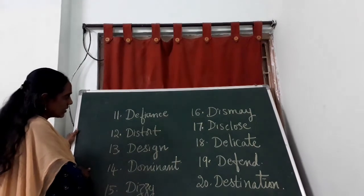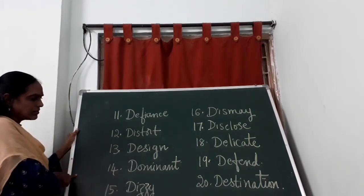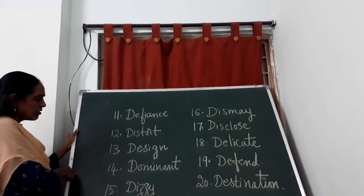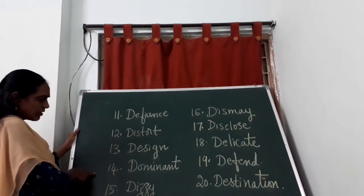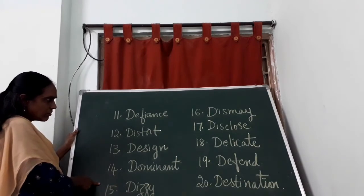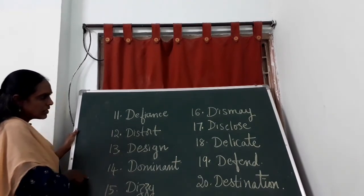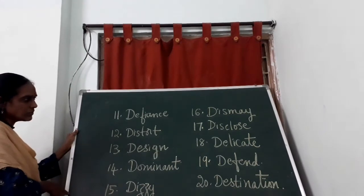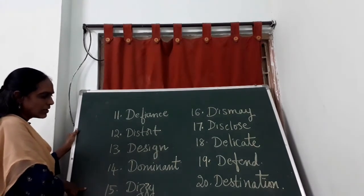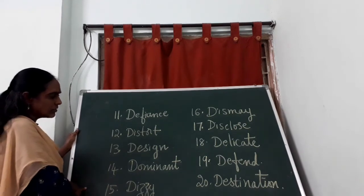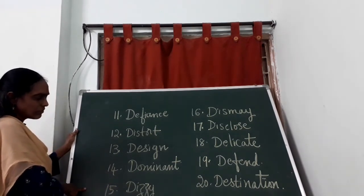Defiance means thikkar (disobedience). Distort means to twist or misrepresent. Design means rupan (to create a plan or shape). Dominant means adhupatyam (dominating). Dizzy means kallu thiruguta (feeling of spinning). Dismay means bayan (fear/alarm). Disclose means rahasunu velladinchuta (to reveal a secret). Delicate means sunnita mayin (easily broken or sensitive). Destination means gamesthayin (the place one is going to).